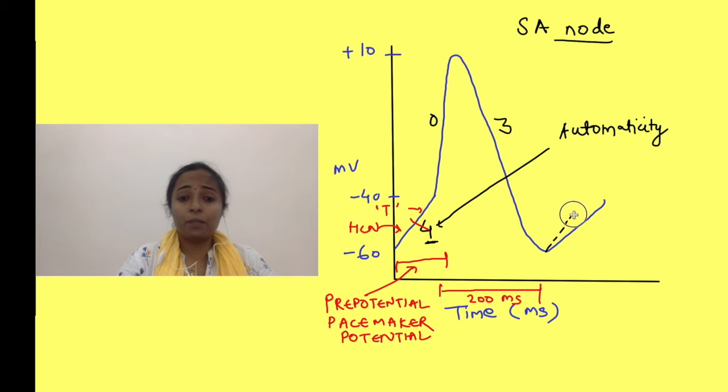The slope of the prepotential is responsible for changing the number of impulses which can be generated in one minute. If it becomes steeper, more number of impulses will be generated per minute, and if it becomes less steep, lesser number of impulses will be generated per minute. Different autorhythmic cells have different slopes of this prepotential—that is, the rate of generation of impulse differs for different autorhythmic cells.